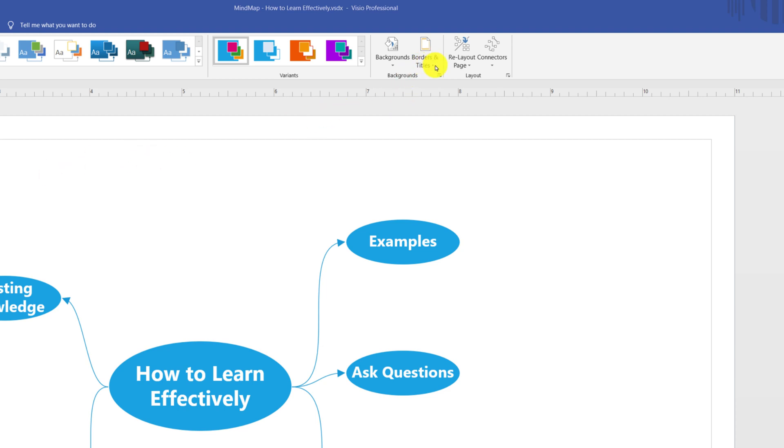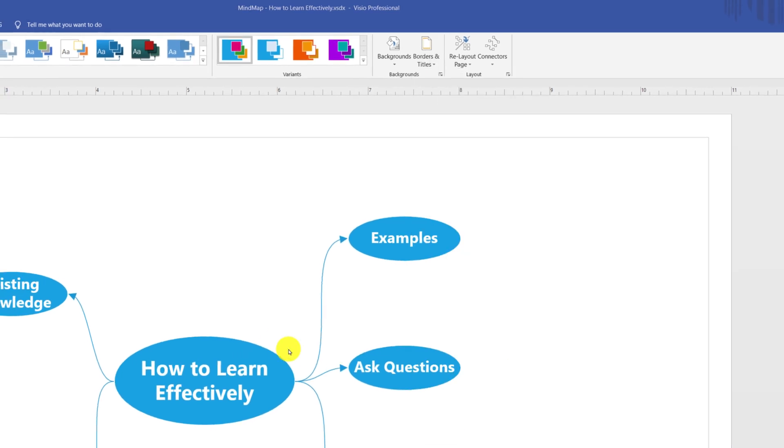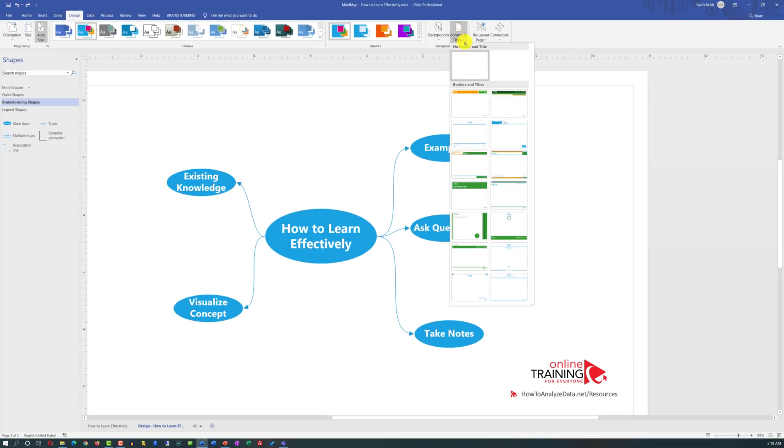And last but not least, is adding some borders and titles. If you're doing a formal diagram, maybe for your project, or trying to add additional information like copyright or something else on your diagram, a good idea might be to introduce a border.